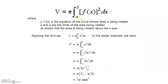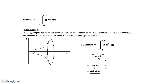The formula is V equals integral from a to b of pi times f(x) squared dx, where y equals f(x) is the equation of the curve whose area is being rotated about the x-axis. Example: y equals 3x squared. V equals pi times integral from 0 to 1 of (3x squared) squared dx equals pi times integral of 9x squared dx. Integration of x squared is x cubed upon 3, so 3 and 3 cancel, giving 9x cubed. With upper limit 1: 3 pi minus 0. Final answer: 3 pi cubic units.